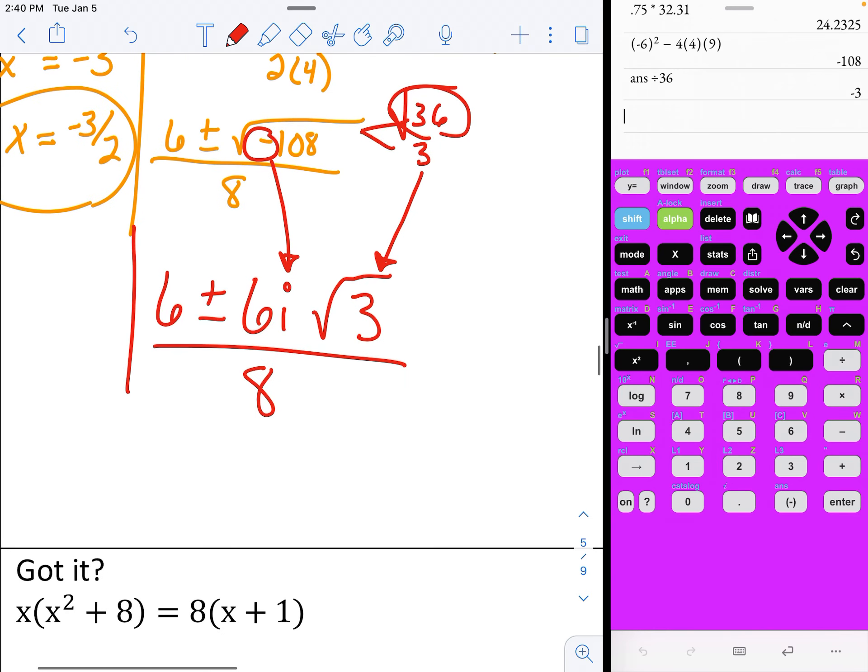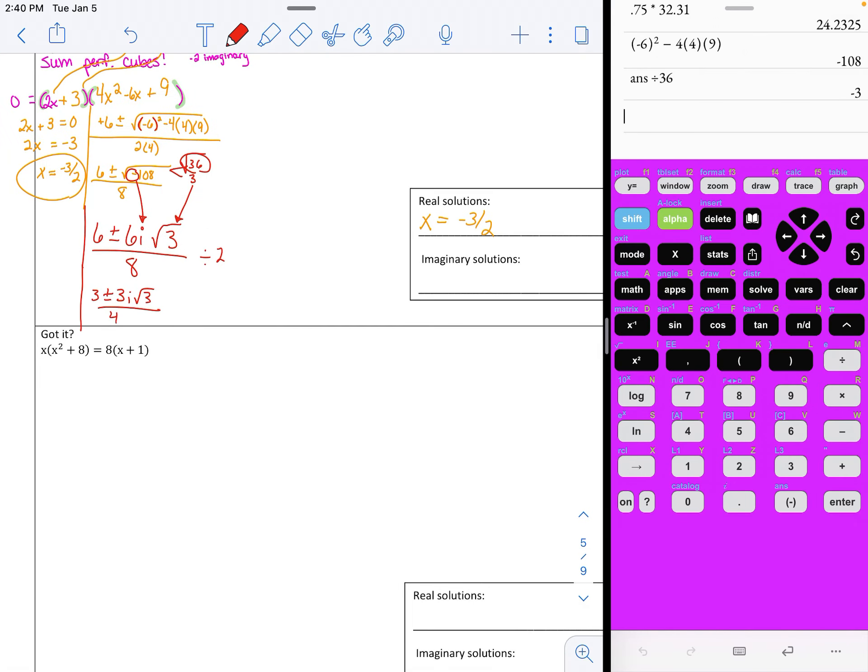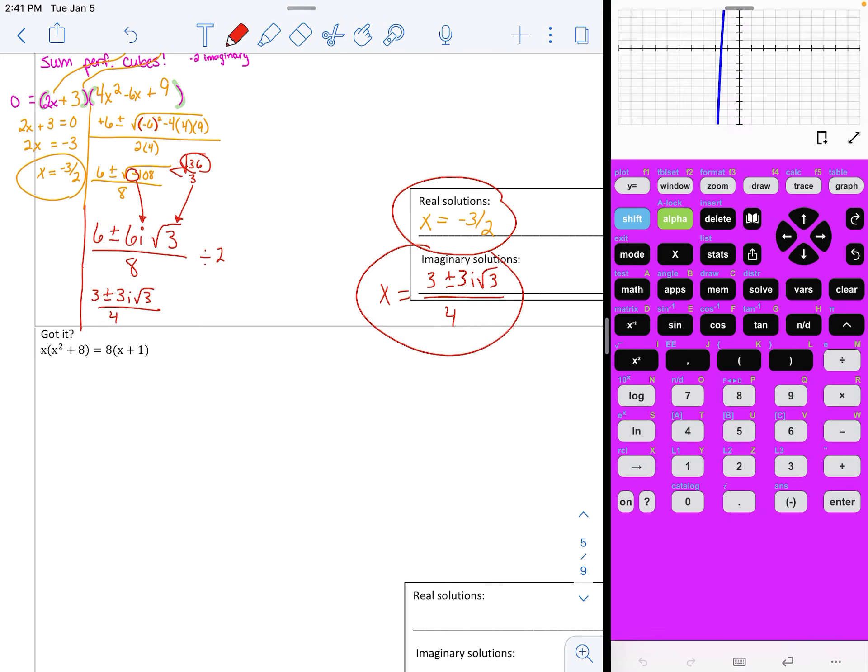And just like in chapter 4, we're going to divide by what we can. So this all divides by 2. So that's 3 plus or minus 3i square root of 3 all over 4. And those are my two imaginary answers. So I found all three solutions. One of them was real. Two of them are imaginary, which really does match the graph because it only crosses the x-axis one real time.